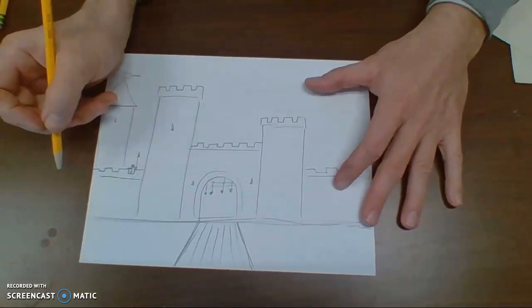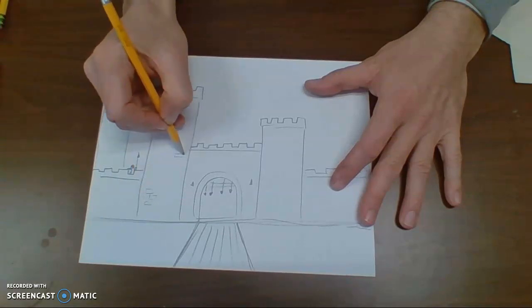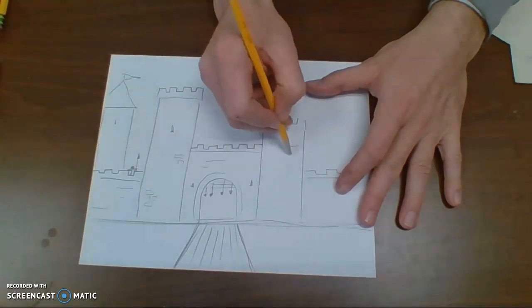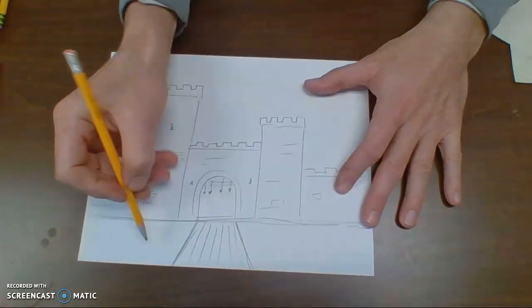So, I could put all kinds of details. I could even add textural details, things like bricks here. I don't want to draw too many. It's going to take me all day, but I could draw little lines here to make it look like I have little bricks all over the place.